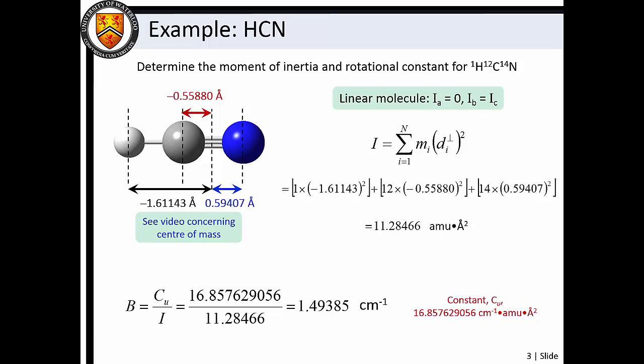By convention, we label the associated rotational constant B, and calculate it by dividing the constant C_U by the moment of inertia. This treatment allows us to predict the rotational energy level structure, and therefore spectrum, of HCN.